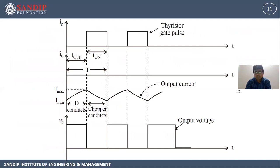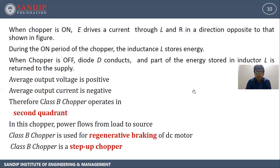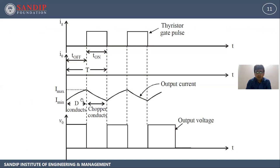This is the graphical representation. We are using a chopper — either SCR, power MOSFET, or IGBT — so we need to trigger the gate. Here we are getting negative current whereas voltage is positive, so we will be getting the graph in the second quadrant. As current is negative, it has been plotted below the axis, and output voltage is positive. During T-on we are triggering; during T-off we are getting the output. This is the output voltage waveform.